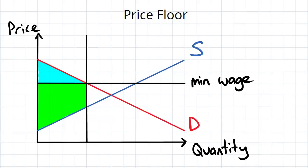Employees are not allowed to sell their labor below the minimum wage, and the result of this is that we end up getting an excess supply. You've got too many people trying to go out and get jobs, but they're unable to because employers are only willing to hire at the minimum wage level.